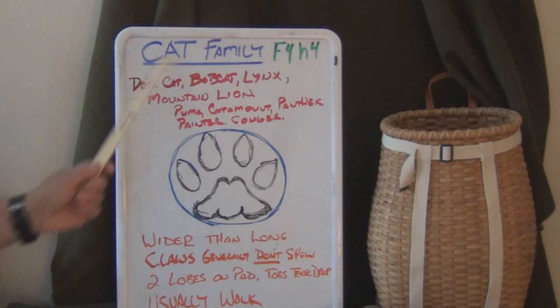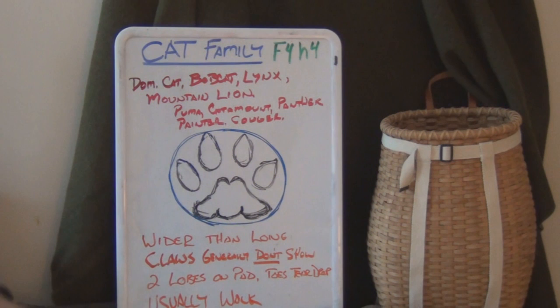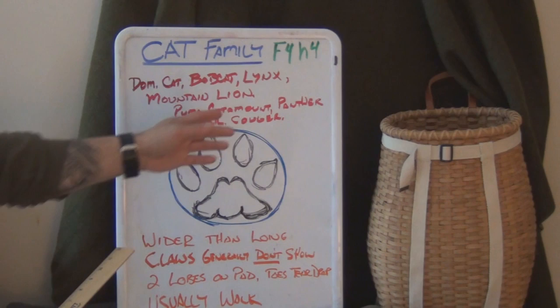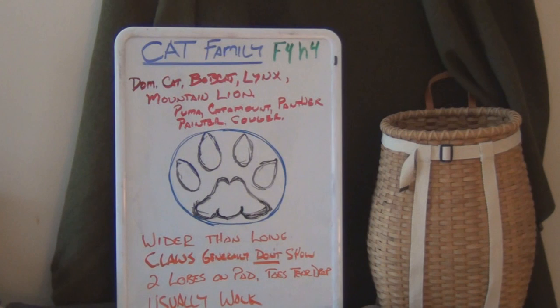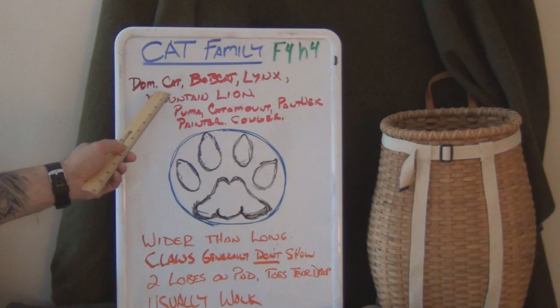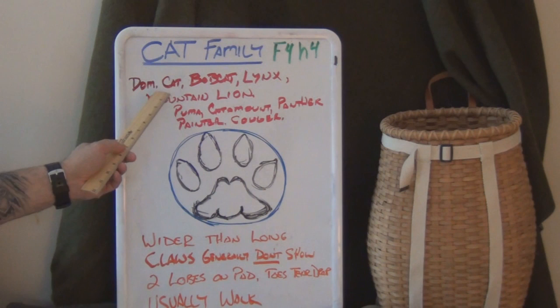In the cat family, we note the code is F4 and H4. The F is capitalized, so we know the front feet are larger than the hind feet, and both feet usually show four toes. In the cat family we're going to refer to the domestic and feral cat, the bobcat, the lynx, and the mountain lion. A mountain lion goes by many different names — puma, catamount, panther, painter, and cougar. It's all the same animal.